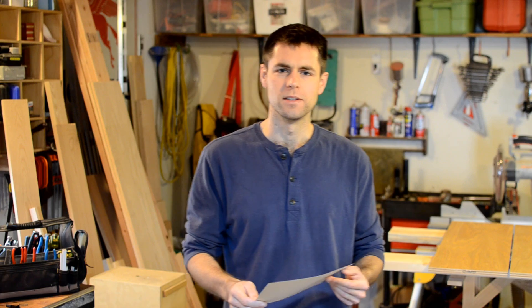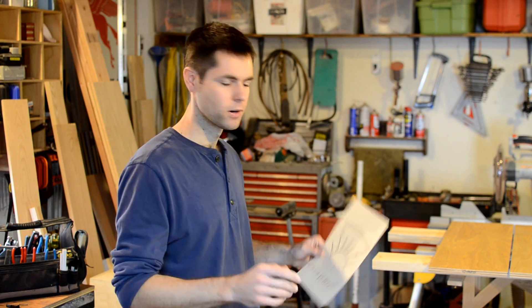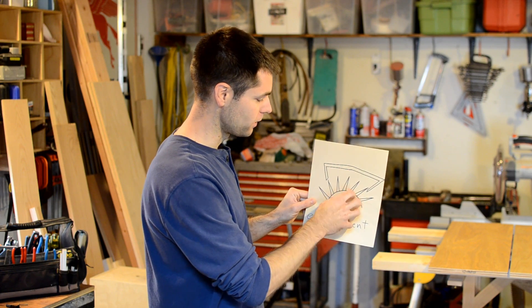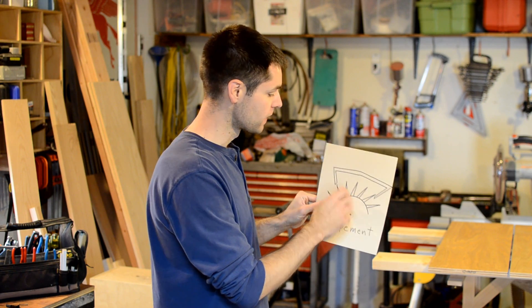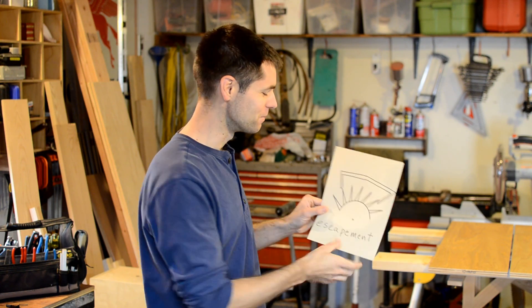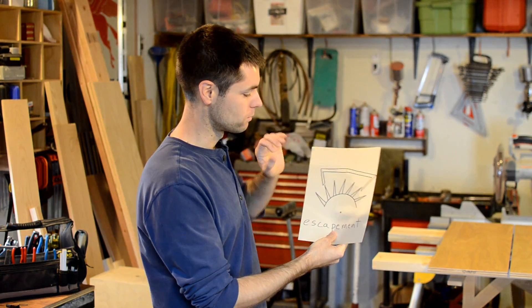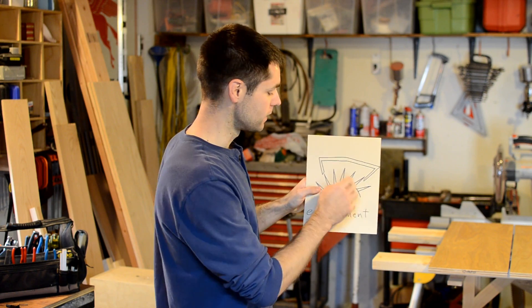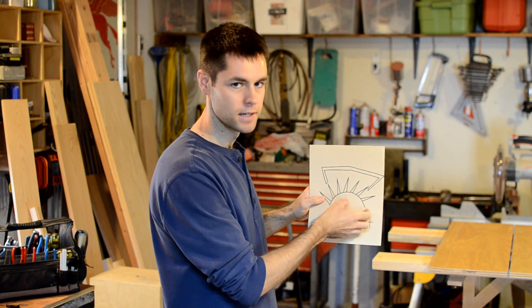A couple quick notes on the escapement here. The way that it works is that you have a weight or a spring which is trying to compel this gear here to move. And the, whatever this piece is, I don't actually know what they're called, is resisting that motion by going back and forth. And then down low you can have a pendulum, and so it's regulating the speed of this.